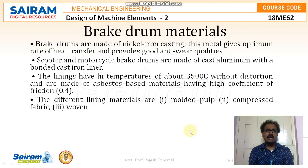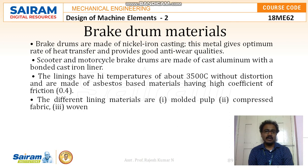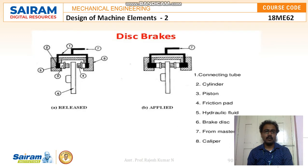Moving to brake drum materials: brake drums are made of nickel iron castings, which give an optimum rate of heat transfer and good anti-wear qualities. Scooter and motorcycle brake drums are made of cast aluminum with a bonded cast iron liner. The linings can withstand high temperatures of about 3500 degrees Celsius without distortion and are made of asbestos-based material having a high coefficient of friction of 0.4. The different lining materials are molded pulp, compressed fabric, and woven.